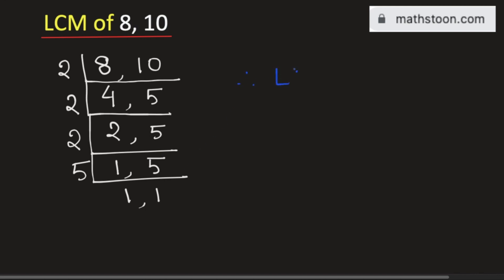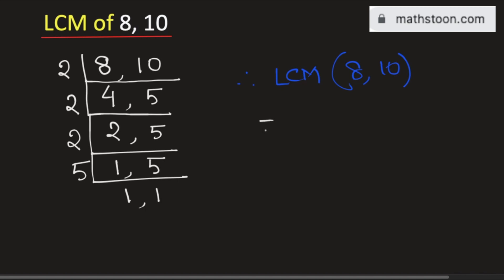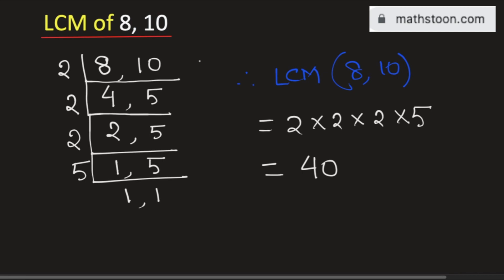The LCM of 8 and 10 will be equal to the product of the numbers on the left-hand side, that is 2 times 2 times 2 times 5. Multiplying these numbers we get 40. So 40 is the LCM of 8 and 10, and this is our final answer. Thank you.